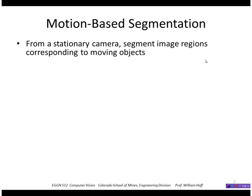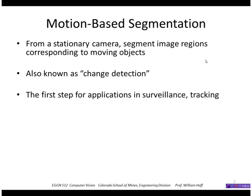We're going to look at the problem of trying to find moving objects from a stationary camera. This problem is also known as change detection — finding places in the image that have changed, probably due to moving objects. It's the first step for applications such as surveillance and tracking, where we need to identify potential pixels that belong to objects that are moving.